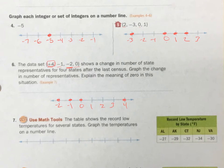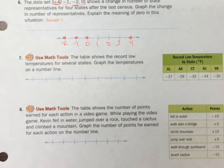Let's go down to number 7. We're going to use the table that shows the record of low temperatures for several states. I'm going to find the lowest temperature. Negative 34 is my lowest. So I'll put negative 34 there.